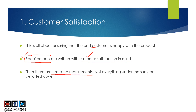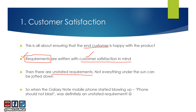There are also unstated requirements — not everything under the sun can be jotted down. For example, take the Galaxy Note — I think it was the Galaxy Note 7 — that mobile phone started blowing up. 'Phone should not blast' was definitely an unstated requirement. Nobody wrote 'phone should not blast' in the requirements document, but this was an unstated requirement that should have been followed based on common sense. So customer satisfaction covers every stated requirement written with the customer in mind, and unstated requirements that should be addressed through common sense.